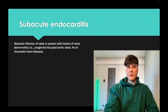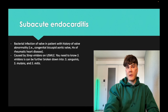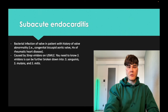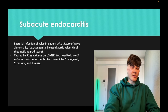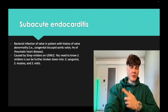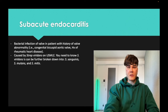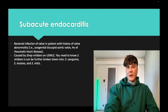Subacute endocarditis occurs in patients who have prior valve issues — e.g., bicuspid aortic valve, or rheumatic heart disease, which causes mitral regurg as a kid and mitral stenosis later in life. Any prior valve issue puts you at risk, and the organism is going to be strep viridans.